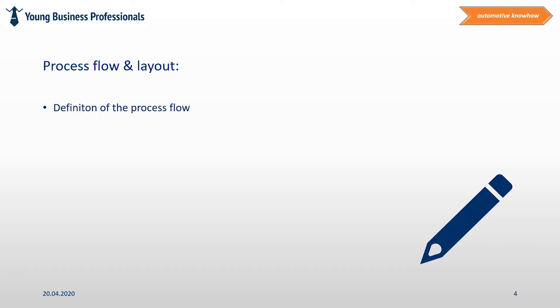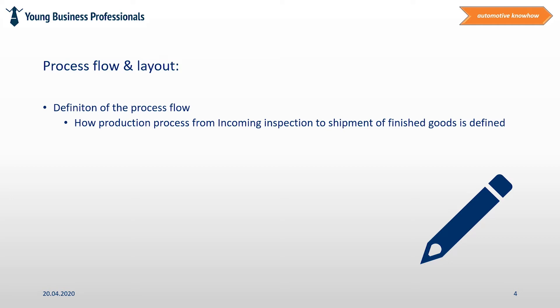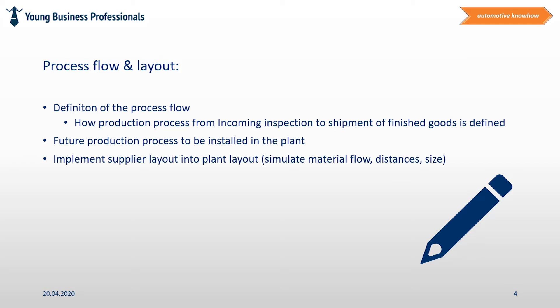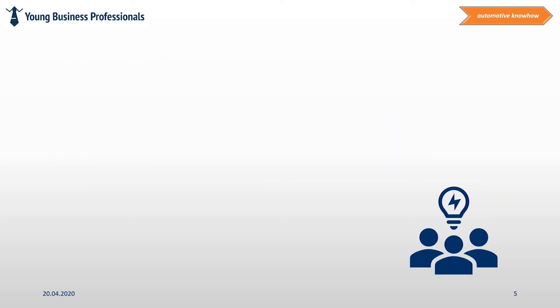Process flow and layout. It is useful to know as soon as possible if the process that shall be installed into the production plant later on can be installed without any constraint from a dimensional point of view, and if the flow of the material is reasonable. A process flow plan helps to design the process and shows how the process runs, starting from receipt of incoming materials until shipment of finished goods from the production plant. This is also an important input for the process FMEA and control plan, and it is a simple tool that helps outside people to understand the flow of the process.